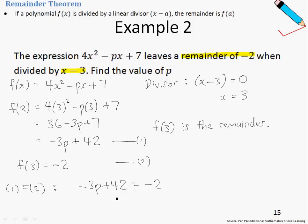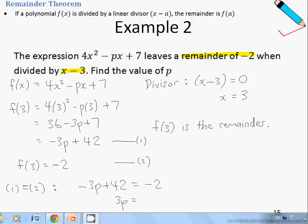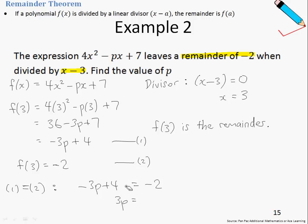Just rearranging this a little bit, we will get... I think I made a little mistake. This should be 43 instead of 42. So just rearranging this, we will get 3p=45. Therefore, p is just 15. And there we have it.